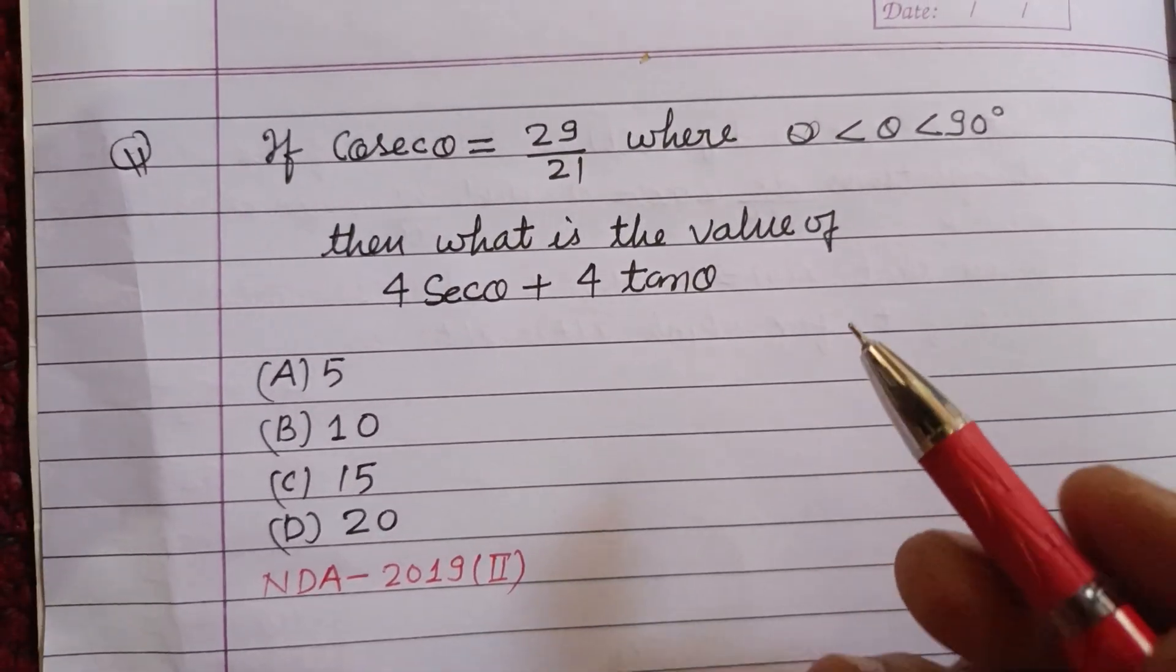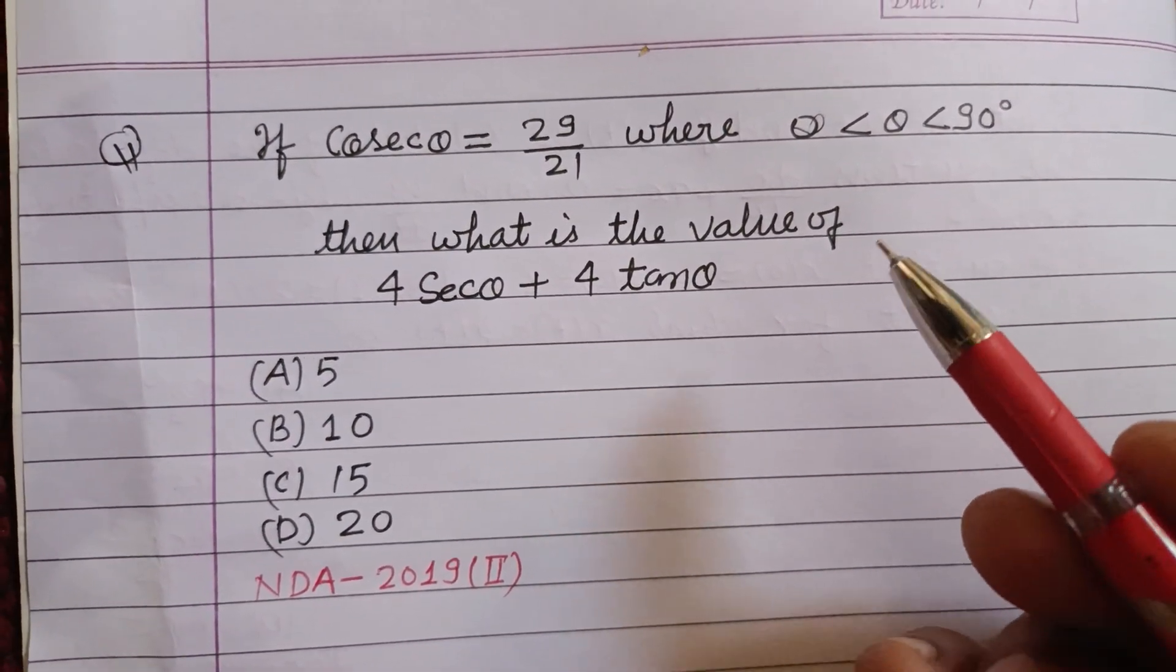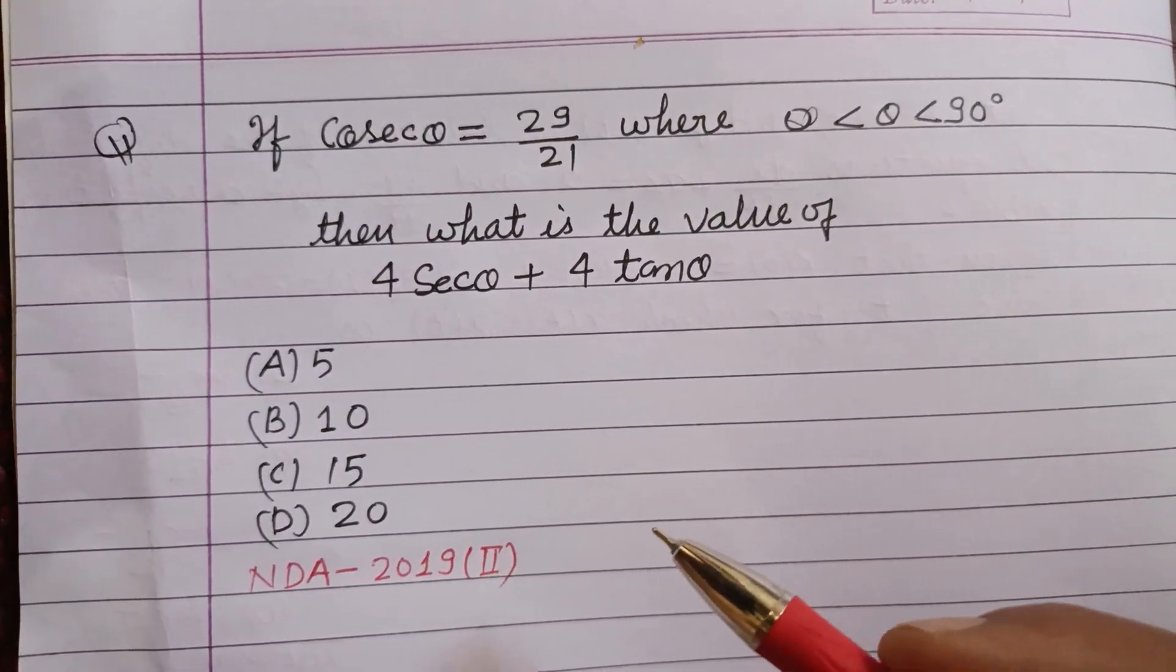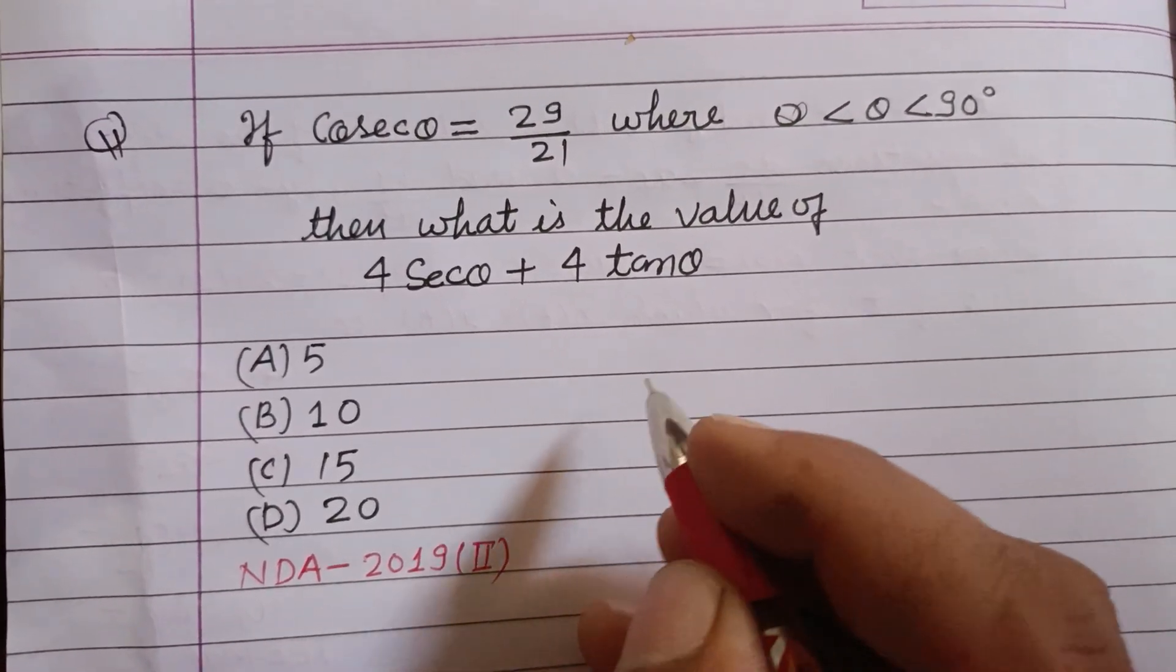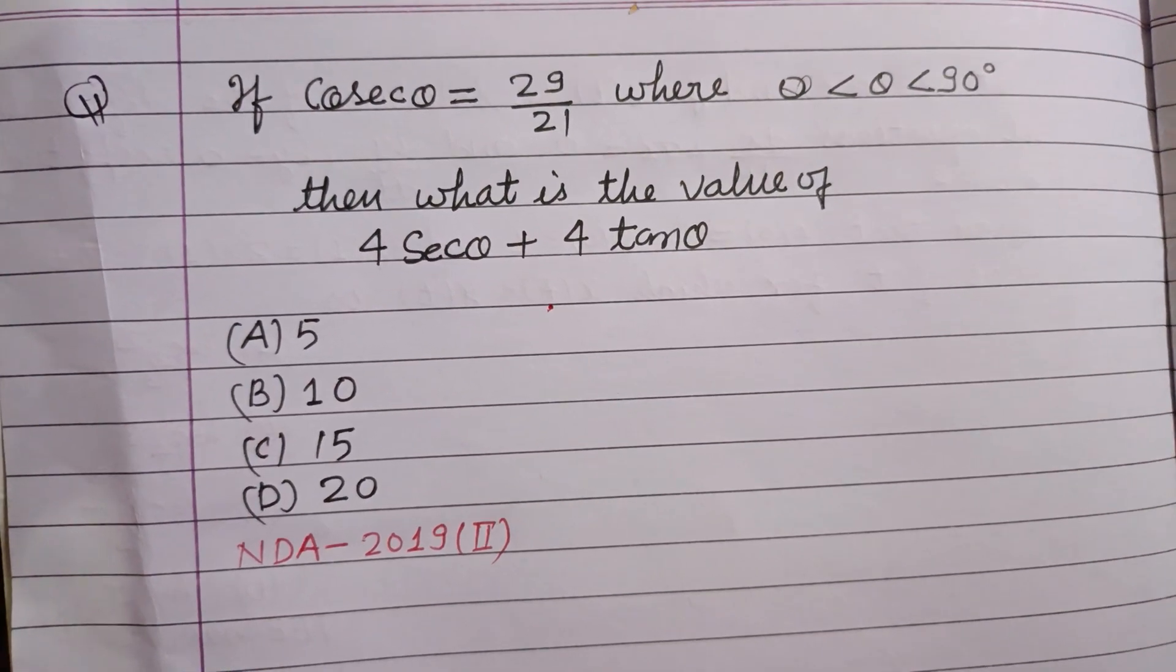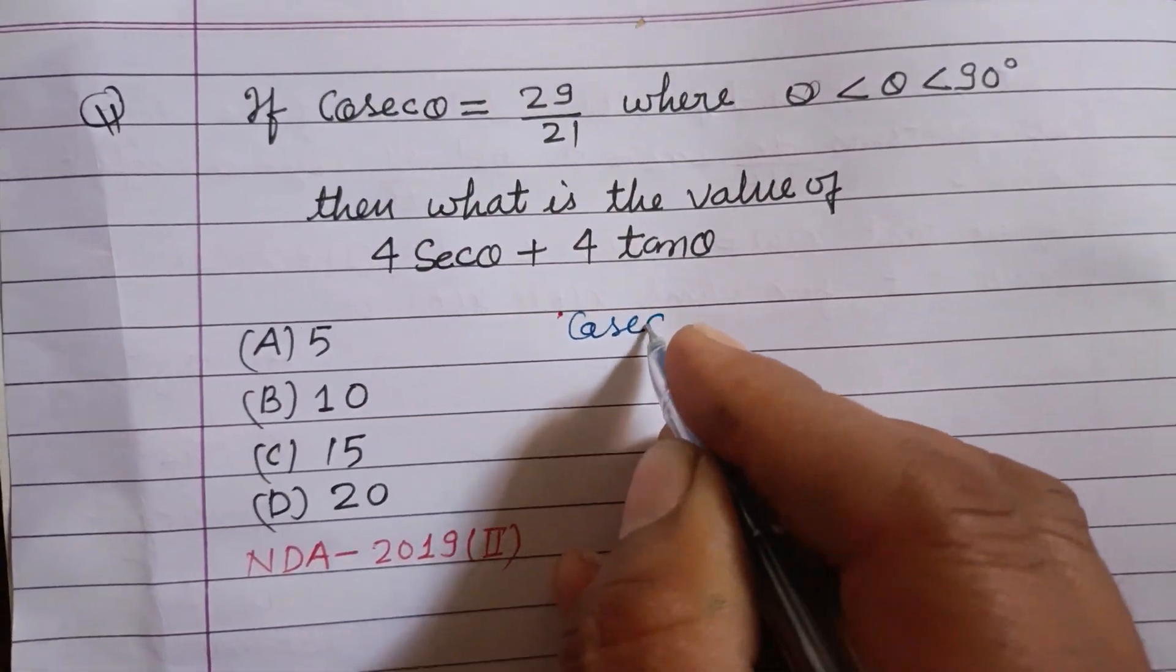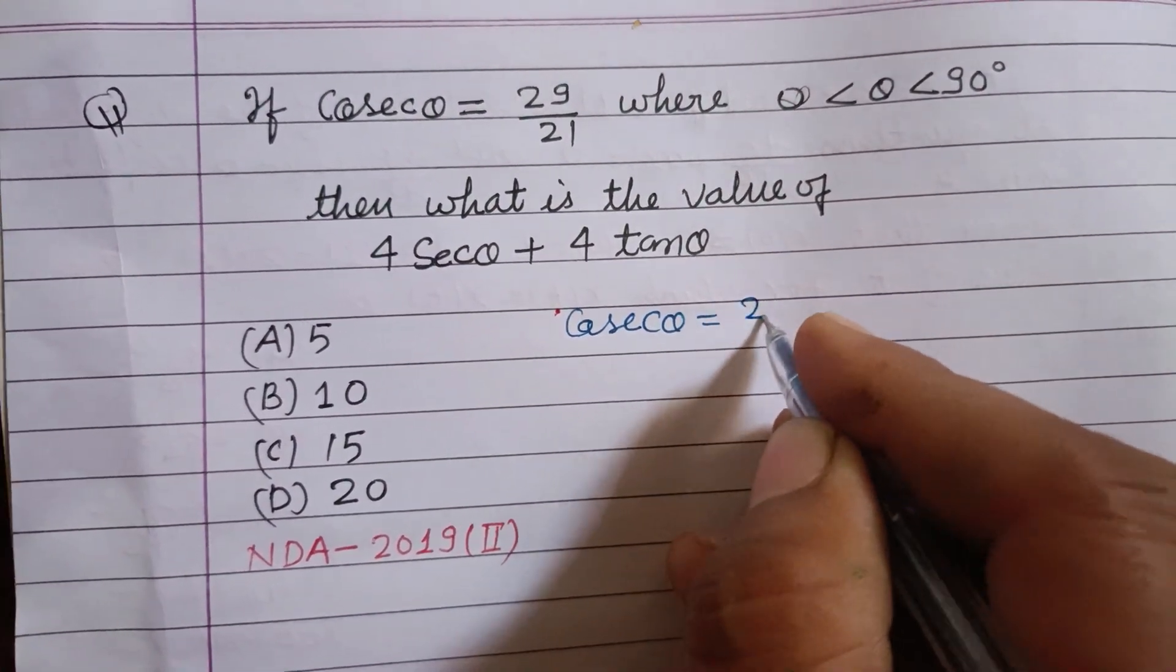If cosec θ equals 29 upon 21, where θ lies between 0 to 90 degrees, then what is the value of 4 sec θ plus 4 tan θ? So students, here it is given that cosec θ equals 29 over 21.